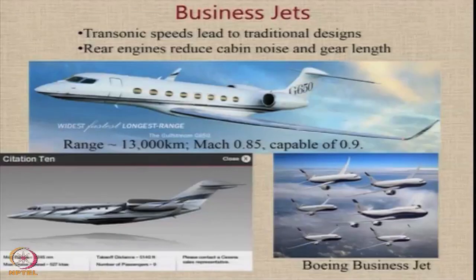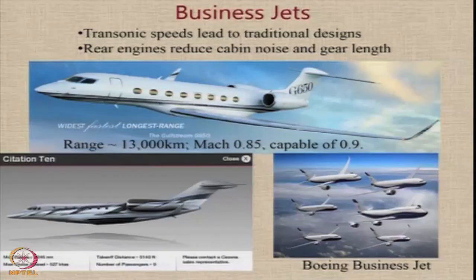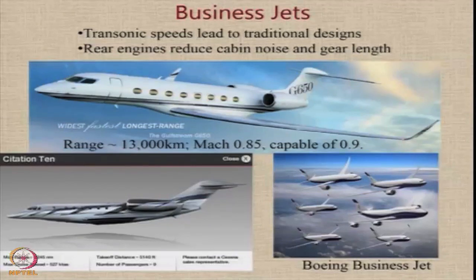In business jets, we normally see transonic speeds, and because of that the designs of these aircraft look very similar to the design of airliners. You can always consider them to be shortened versions of airliners. For example, the Gulfstream G650 is a very popular aircraft used for business aviation. You can also have Citation, and even Boeing has come into this field in the form of Boeing Business Jets, which are essentially shortened or shrunk versions of their regional or small range transport aircraft.